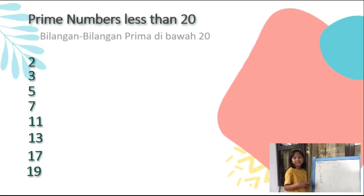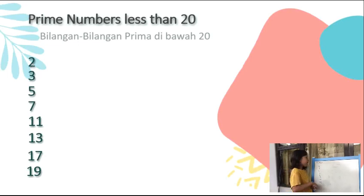A prime number is a number that can only be divided by 1 and the number itself.